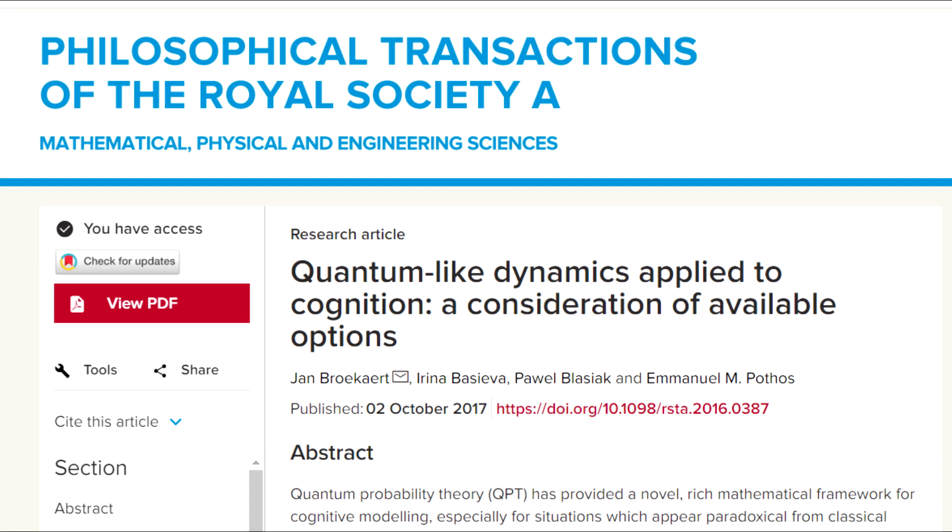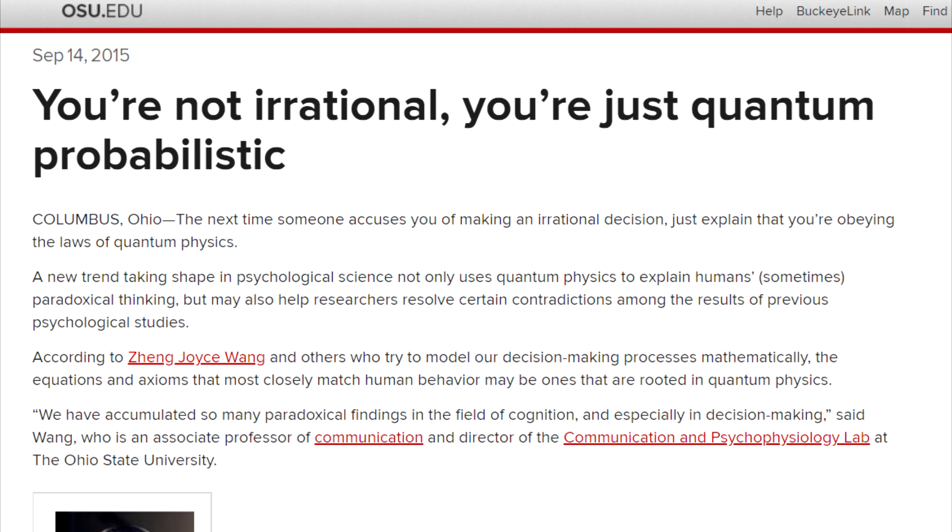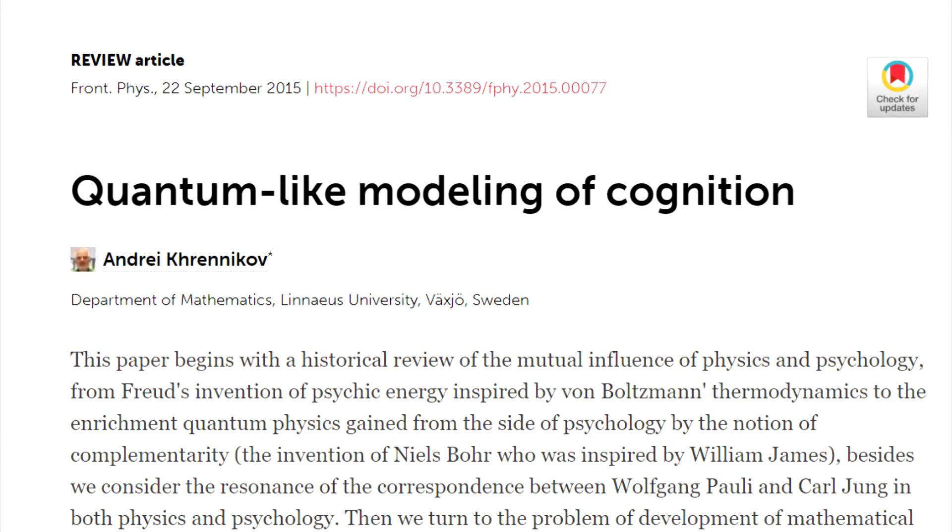We have some pretty strong theoretical evidence showing that cognitive processes are described by the Schrodinger equation, meaning thoughts and emotions actually behave like states and wave functions. However, we have not had much in the way of hard experimental data thus far. This paper changes that though.